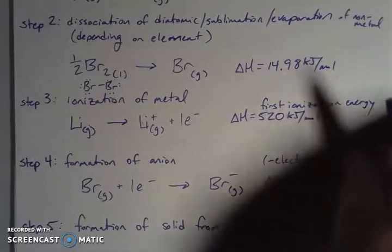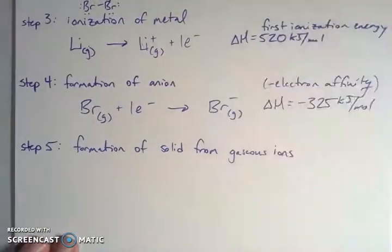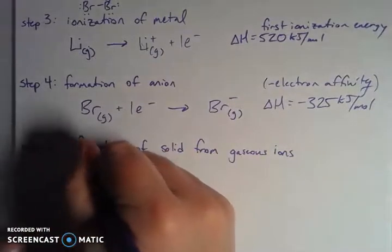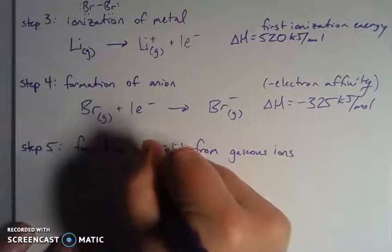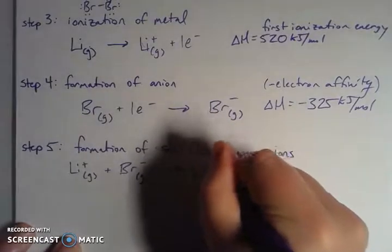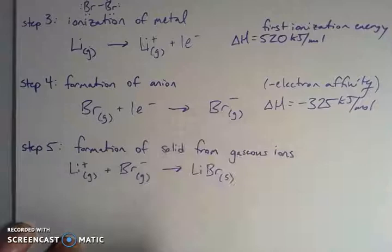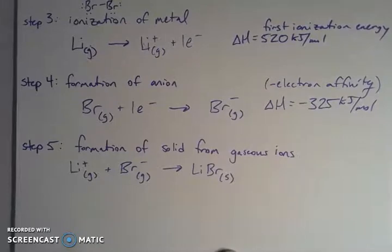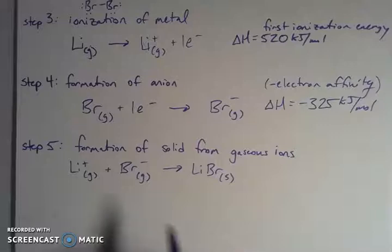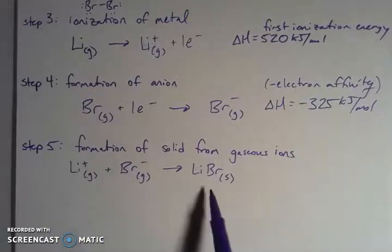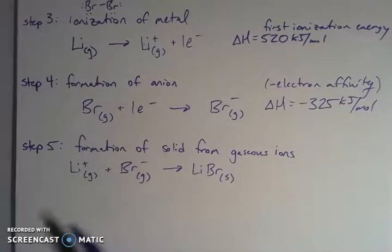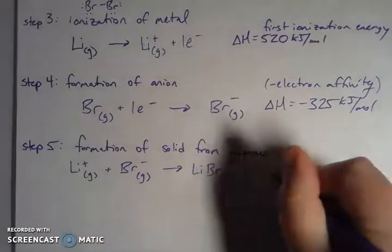Now we need to go to step 5, which is the formation of the solid from the gaseous ions. Now I have lithium plus one in the gaseous state and bromide in the gaseous state. Now I'm going to form lithium bromide, and I will form the solid. That formation of the solid is the lattice energy we were talking about. It's actually going to be the negative lattice energy, because this is the opposite of the way I wrote it out initially.